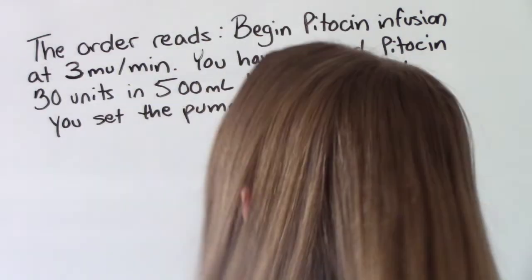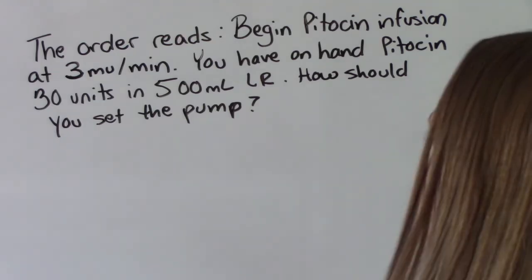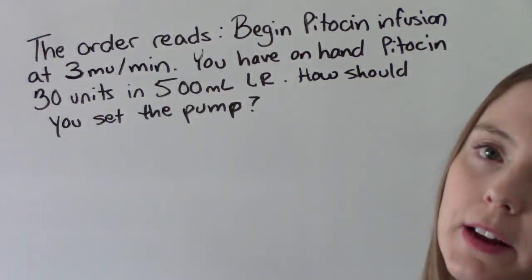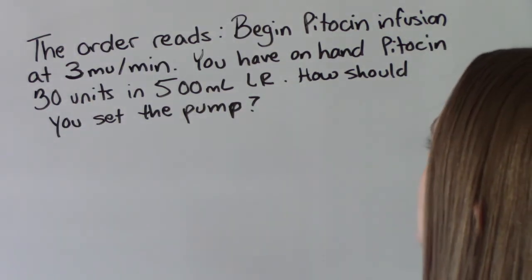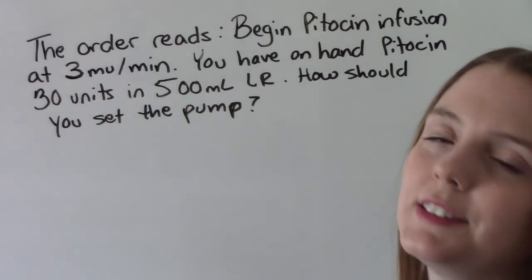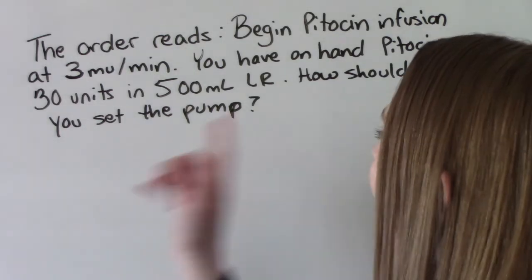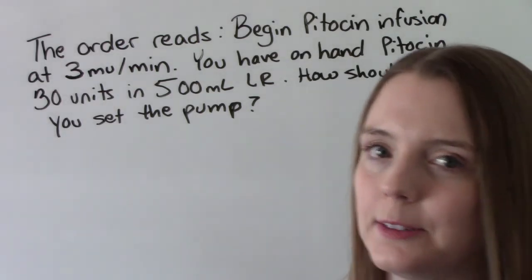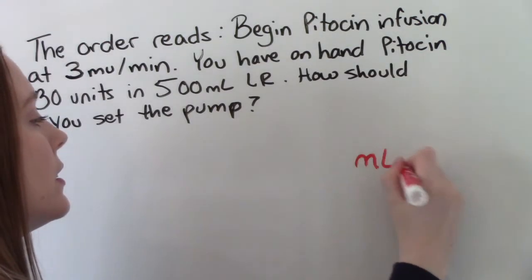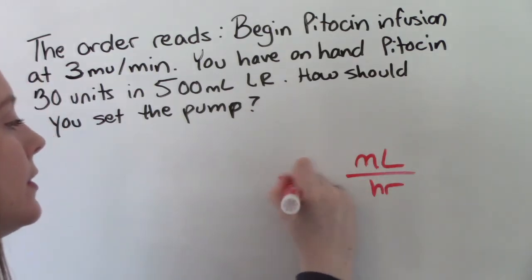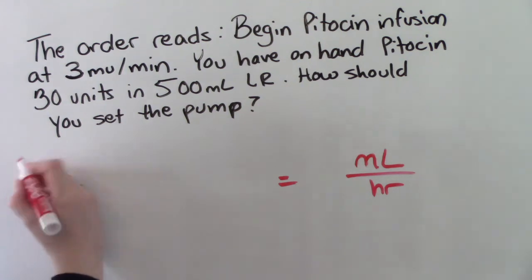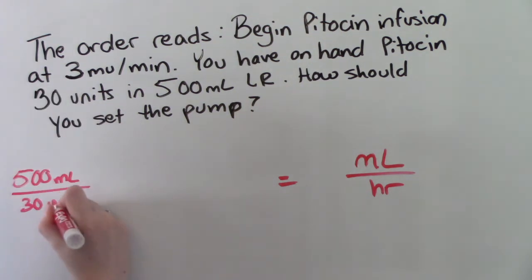Okay, last one. We have an order. It says, begin Pitocin infusion at 3 milli units per minute. You have on hand Pitocin 30 units in 500 mLs lactated ringers. How do we set the pump? So how many mLs per hour? So that's what's going in our answer. So where do we have this information? 500 mLs in 30 units.